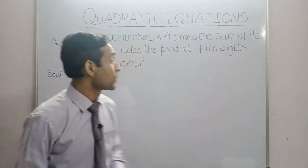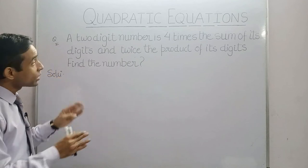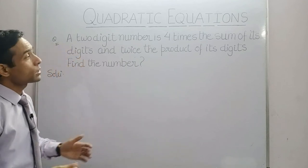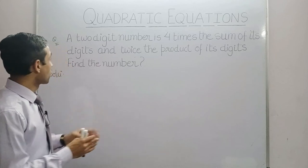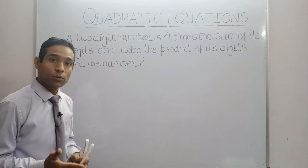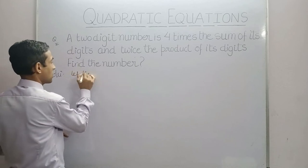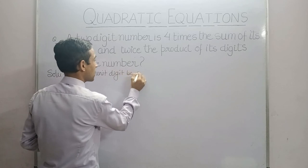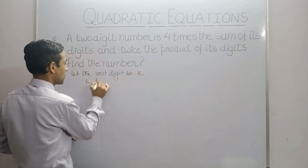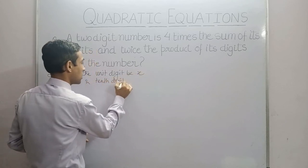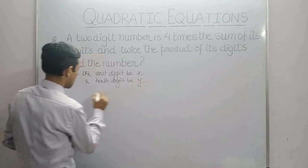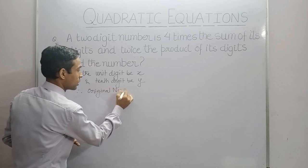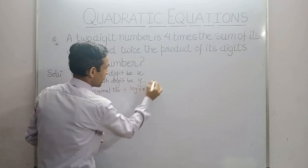Now, let's see what our second question is. A two-digit number is 4 times the sum of its digits and twice the product of its digits. Find the number. So the first step is same. Let the unit digit be x and tens digit be y. Therefore, original number = 10y + x.